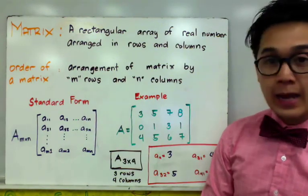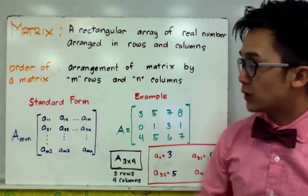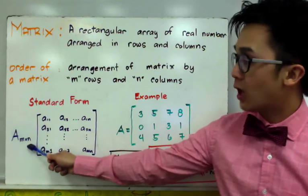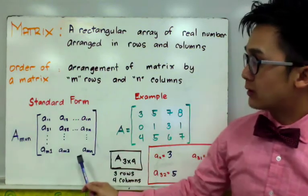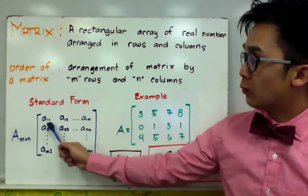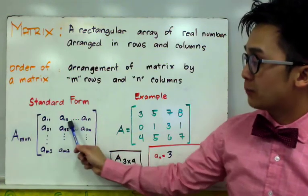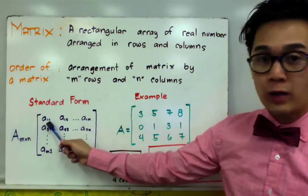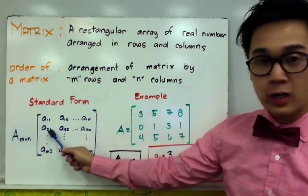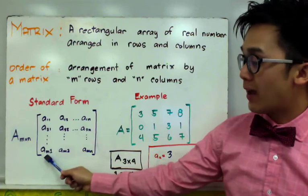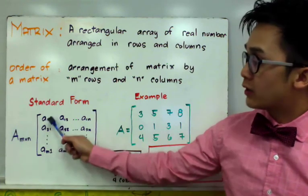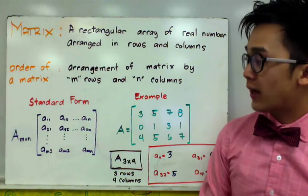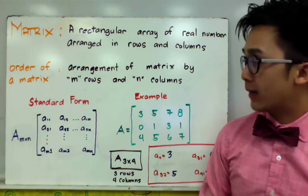The standard form of an m by n matrix — meaning m rows and n columns — is given by a specific format. Each entry in this matrix has a subscript, such as a sub 1 1, a sub 2 1, up until a sub m 1. These subscripts serve as placeholders for each entry in our m by n matrix.